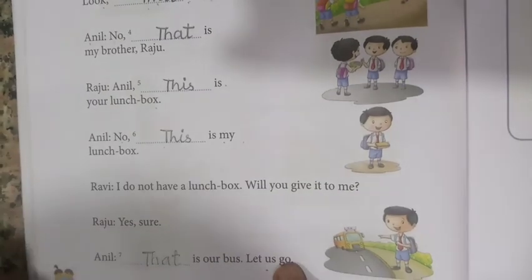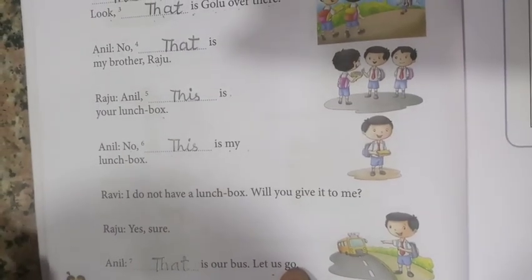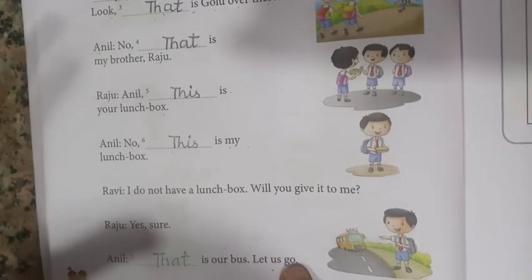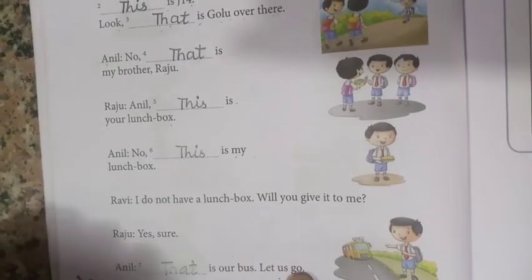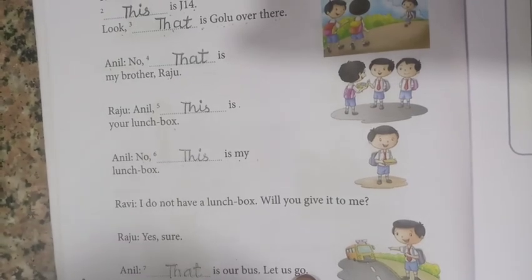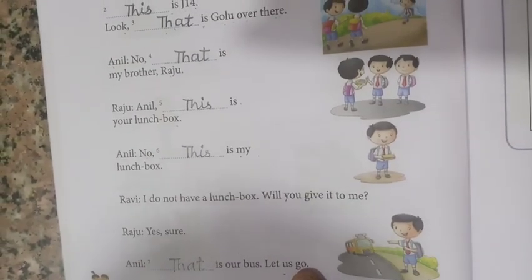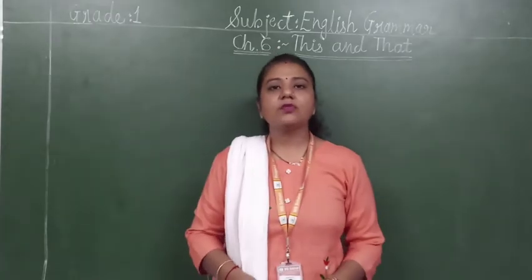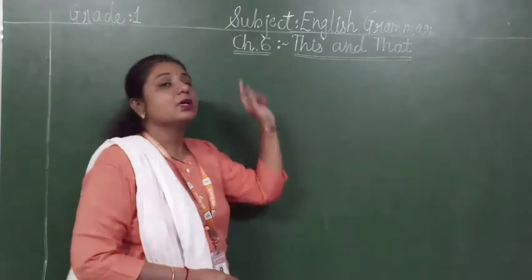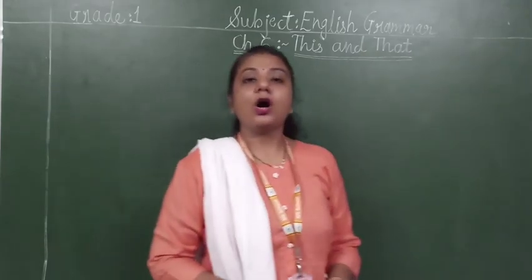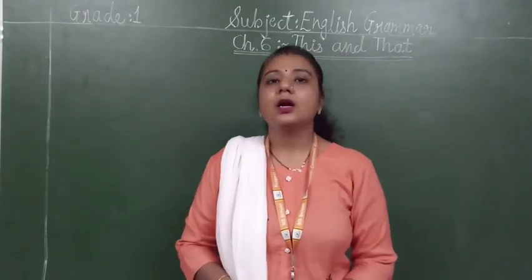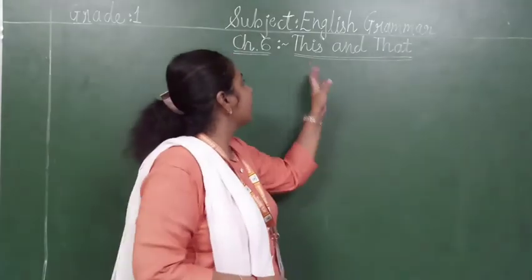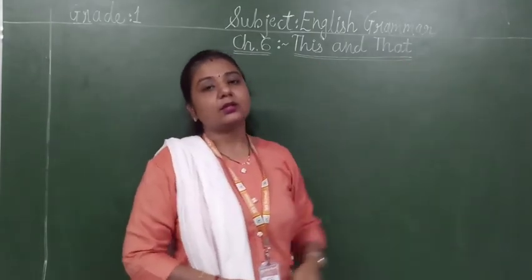Here, three characters are there — Anil, Ravi, and Raju. Woh apni bus ke liye wait kar rahe the — lunch box bhi tha. And where we have to use 'this' and 'that' — that I taught you. So, practice at your home and write the whole exercise in your Grammarland textbook. We have completed our chapter number six — 'This and That.' You have to write all the exercises in your Grammarland textbook. Thank you very much for watching this video. I hope you understood where we have to use 'this' and 'that.' Thank you very much everybody.